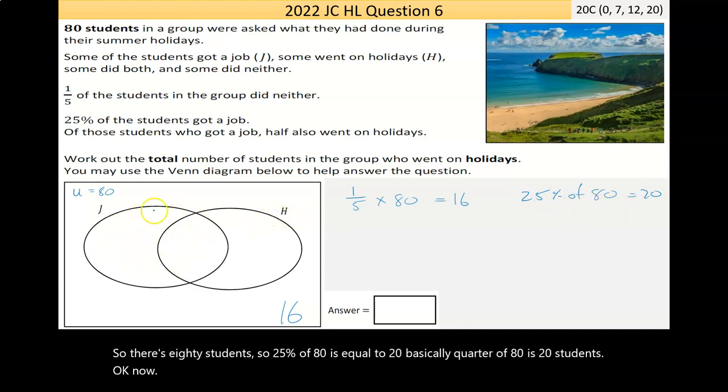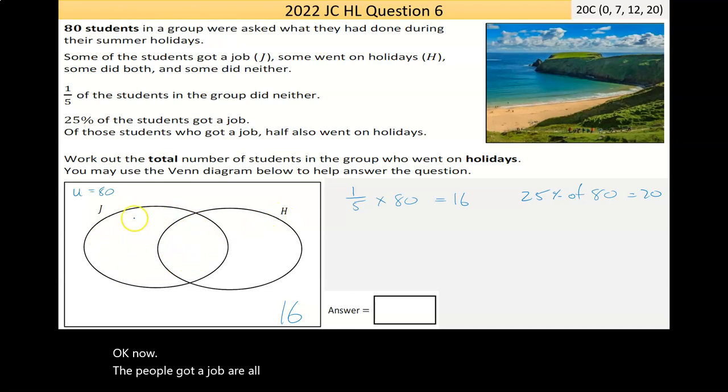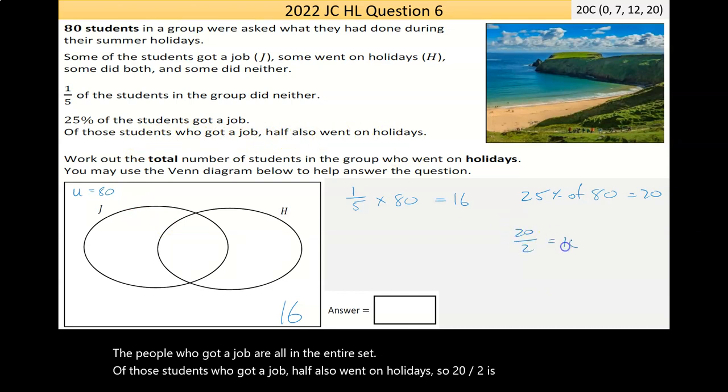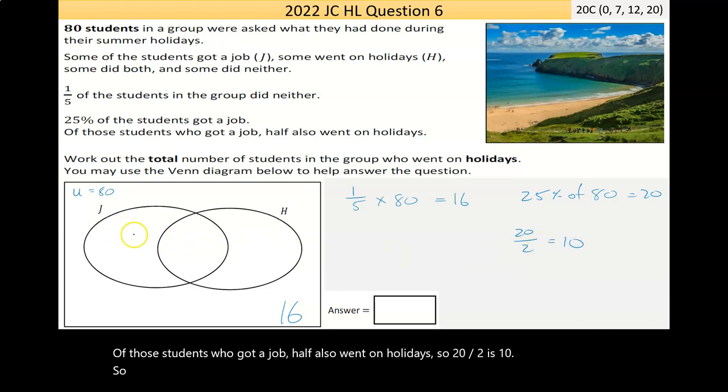Now the people who got a job are all in the entire set. Of those students who got a job, half also went on holidays. So 20 divided by 2 is 10. So 10 people who got a job also went on holiday, and they should be in there.